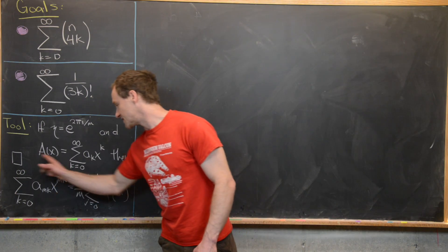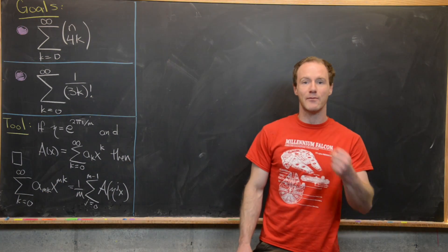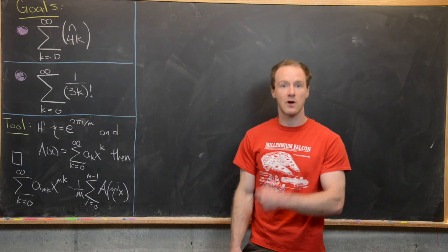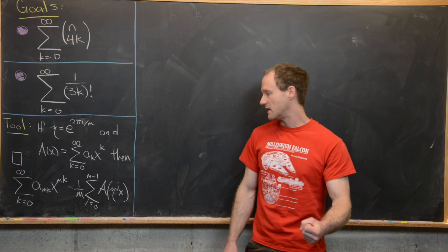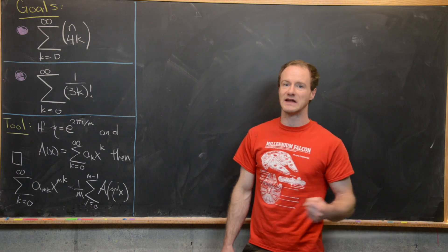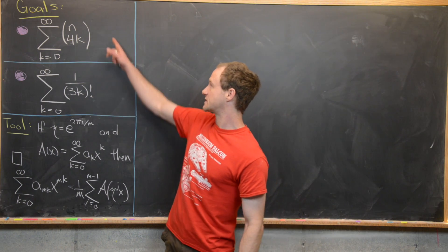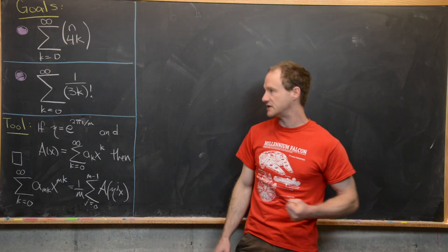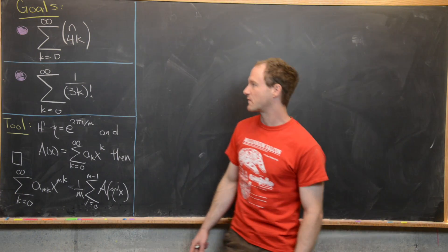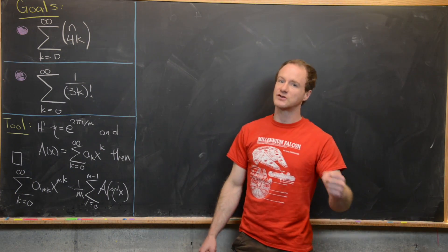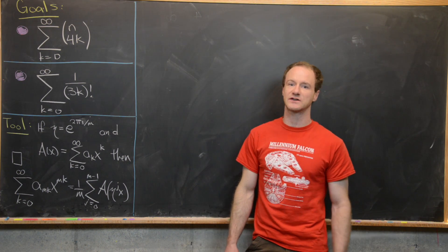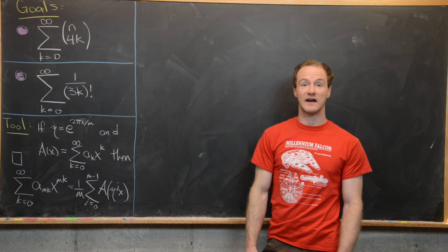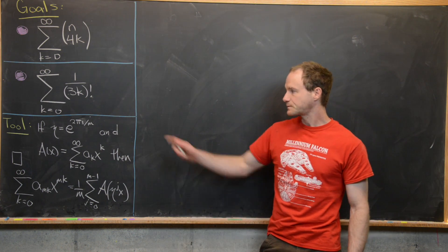This gives us a generating function for every m-th term of the sequence. We start with a_0, the next one is a_m, then a_{2m}, and so on. Notice here the first sum gives n choose 0, then n choose 4, then n choose 8. And the second gives 1 over 0 factorial, then 1 over 3 factorial, then 1 over 6 factorial. So this tool is extremely helpful for finding closed forms for these sums.